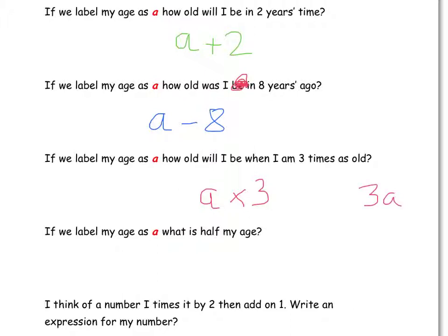Because remember, we don't need to include the multiplication sign. If we label my age as a, what is half my age? So yet again, we don't know what my current age is. But half of it, what does it mean to half my age? Well, it means to divide by 2. So we can either write that as this, or we could label it as a over 2.